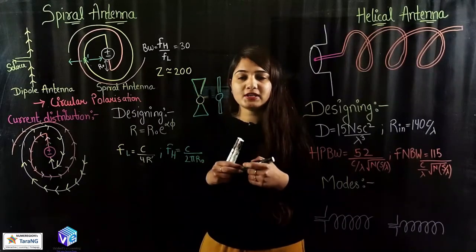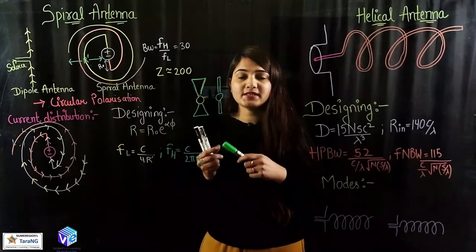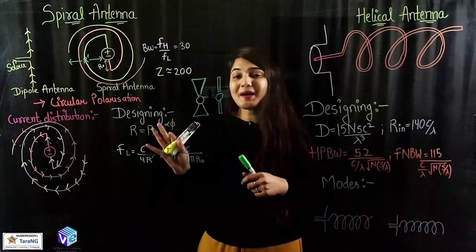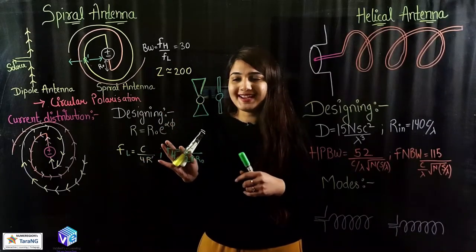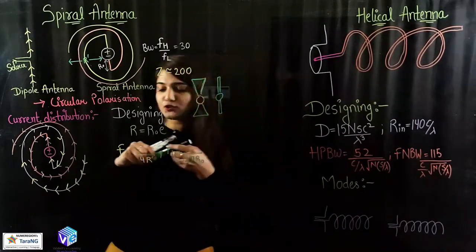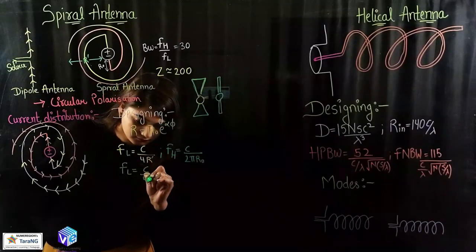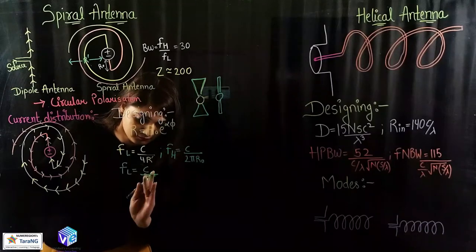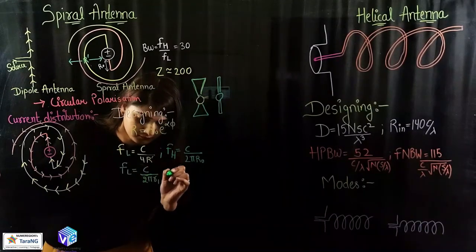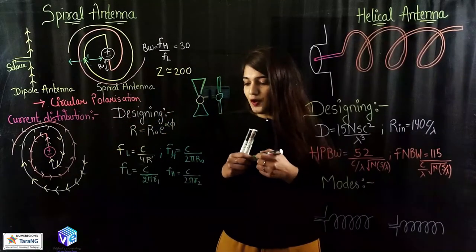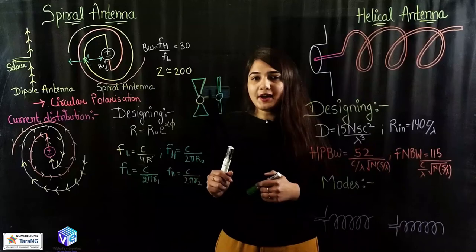The applications involve missile applications, aircraft, direction-finding applications, and telemetry applications as well. All of these make the spiral antenna very useful. For the Archimedean type of antenna, FL and FH would be equal to C upon 2πR₁ and C upon 2πR₂ respectively.